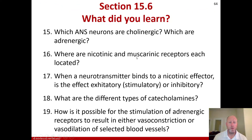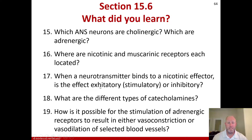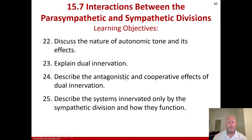For Section 15.6, what did you learn? Which autonomic nervous system neurons are cholinergic? Which are adrenergic? Where are nicotinic and muscarinic receptors each located? When a neurotransmitter binds to a nicotinic receptor, is the effect excitatory or inhibitory? What are the different types of catecholamines? How is it possible for the stimulation of adrenergic receptors to result in either vascular constriction or vascular dilation of selected blood vessels? That's Section 15.6, and we'll come back for a brief coverage of Section 15.7.